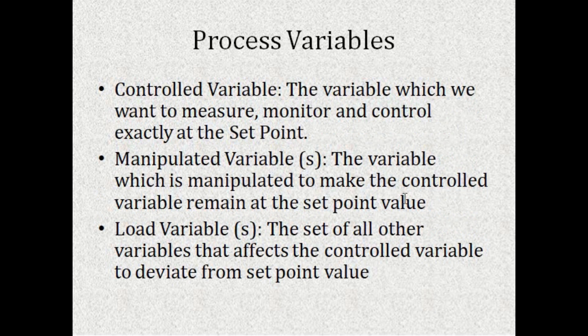Now we need to see what process variables are. Process variables are of three types: controlled variable, manipulated variable, and load variable. Generally, the controlled variable is one. The manipulated variable can be one or more than one. The controlled variable is the variable which you want to measure, monitor, and control exactly at the set point.